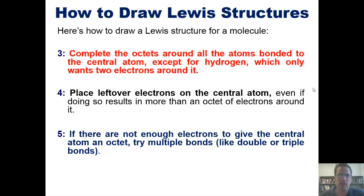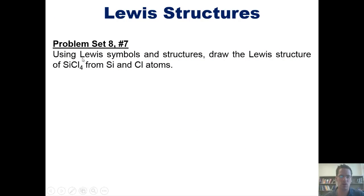Now, I realize all these steps I've just given you sound a little bit complicated and vague and difficult to understand. So that's why I'm going to show you now a series of problems. In this problem, I'm asking you to use Lewis structures and symbols to draw the Lewis structure of silicon tetrachloride from silicon and chlorine atoms. I'm not going to do that right here for you in this presentation, but we'll place a link here to a separate video in which I do.